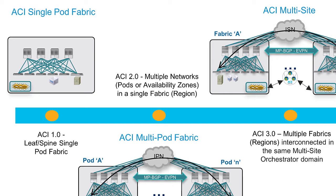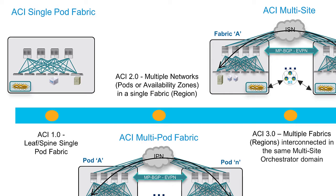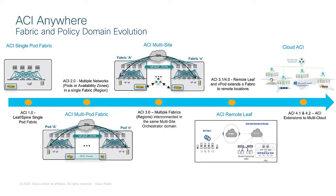Before diving into the details of the ACI Multisite Architecture, I would like to cover the journey that we did with ACI from the day of its inception, back in 2014, to today. In the first release, ACI 1.0, ACI looked like what you see on the top left of the slide — a single pod fabric built by connecting a set of ACI leaf nodes to a set of ACI spine nodes using full mesh connectivity.